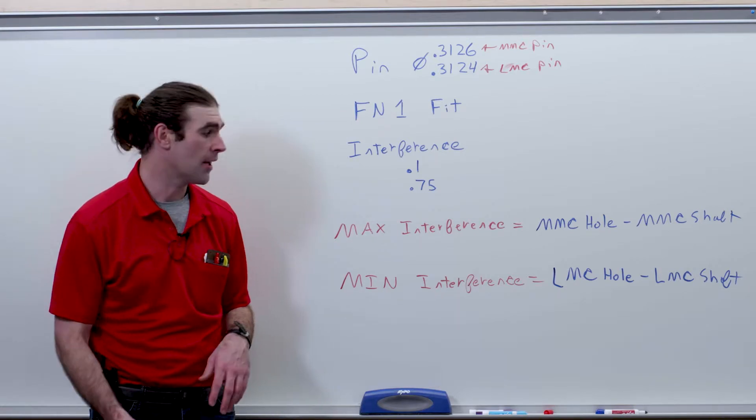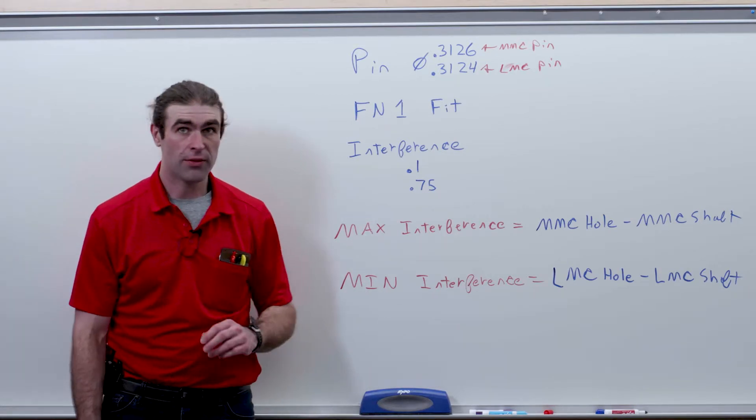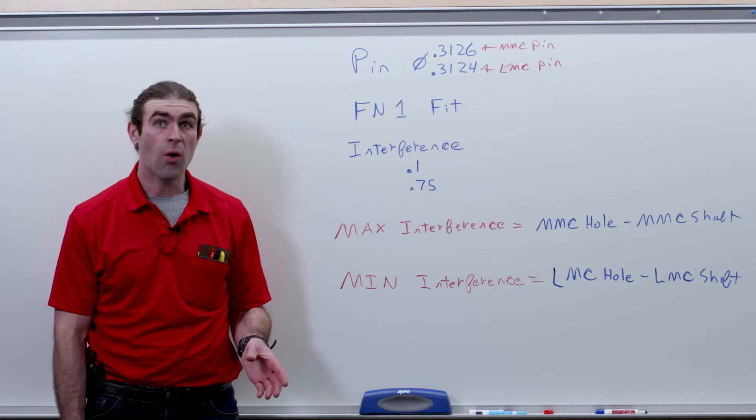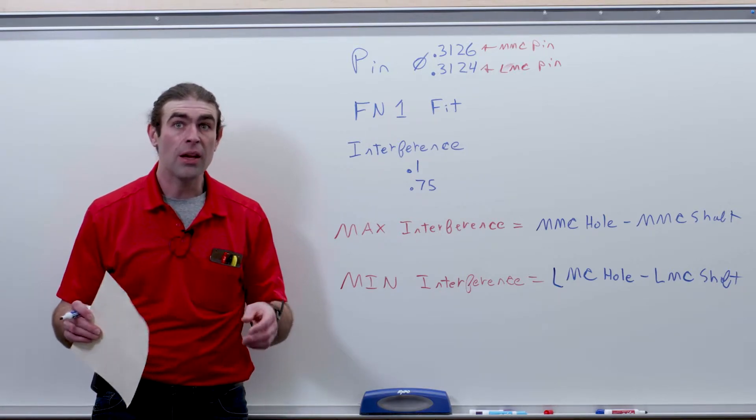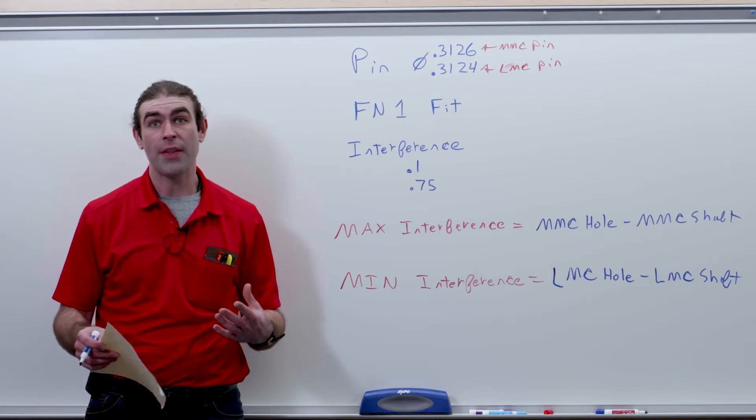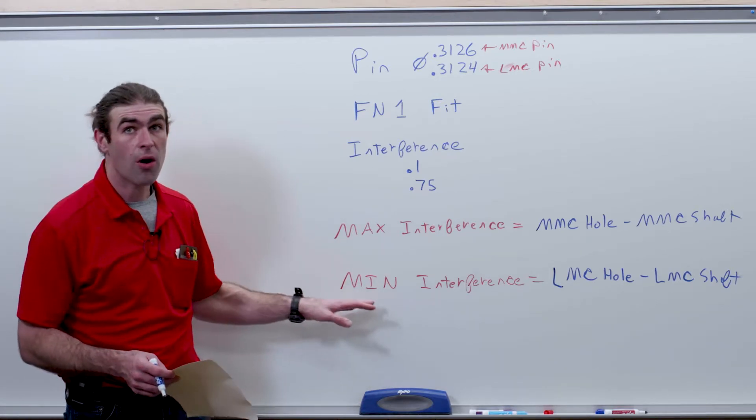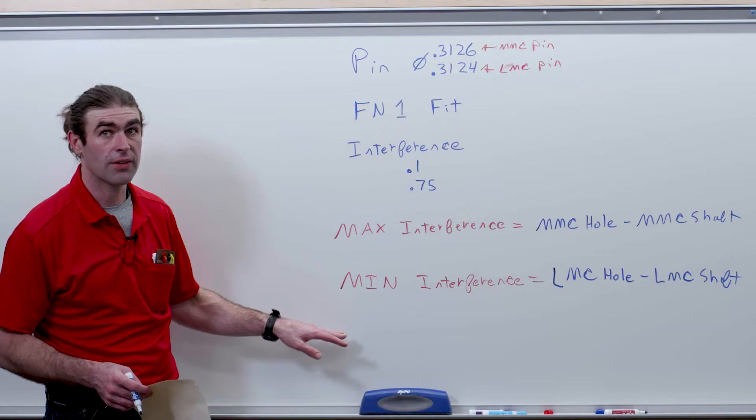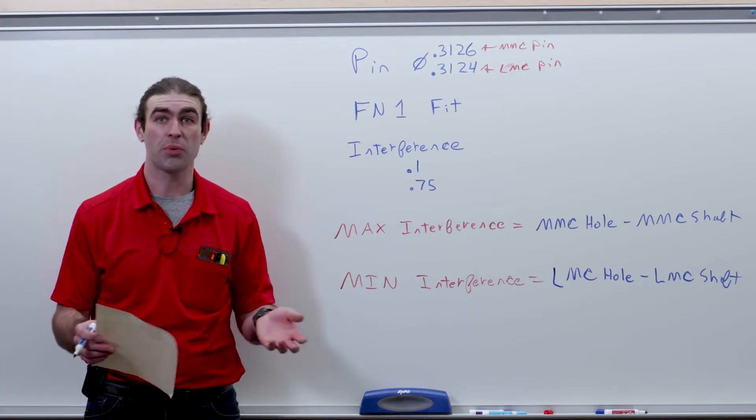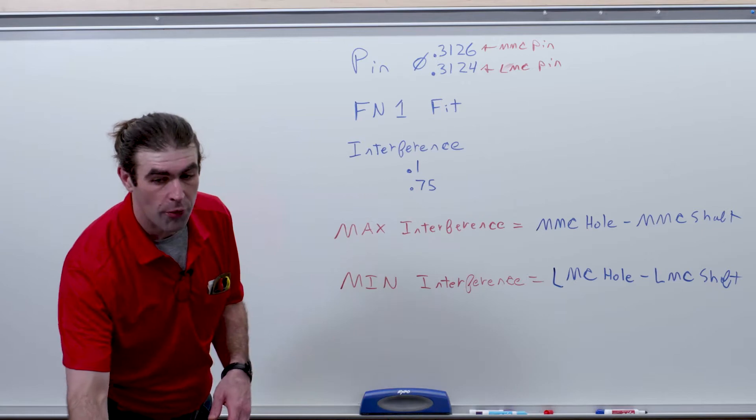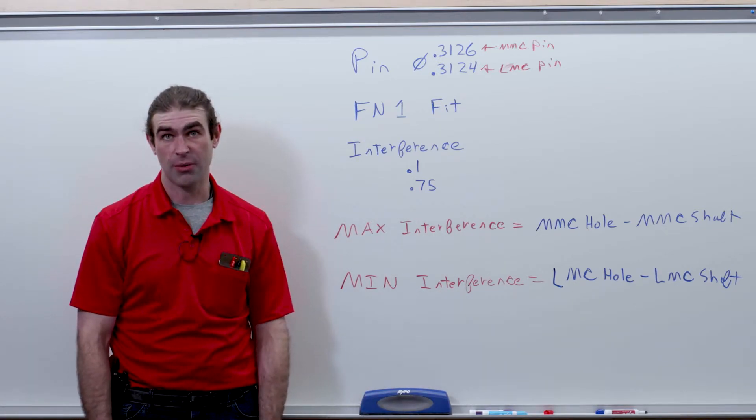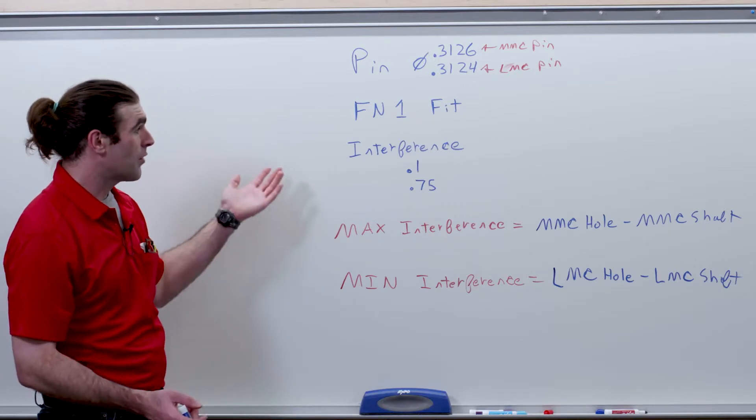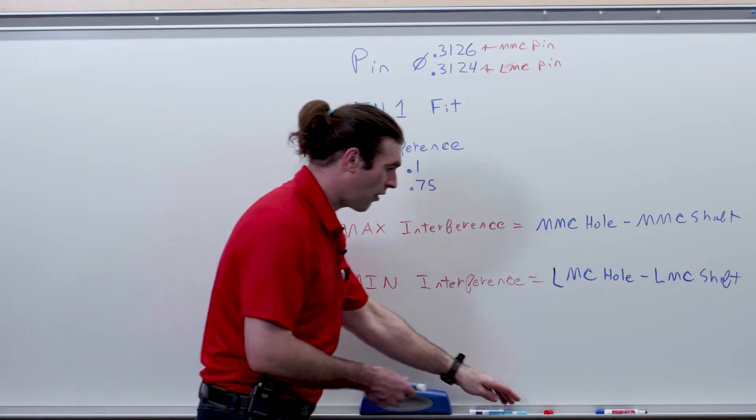And if you had allowance, this would be your allowance, so the least wiggle you could have if you wanted the parts to fit freely. The minimum interference, the LMC of the hole, so the largest the hole can be compared to the smallest the shaft can be, we would want this to be a negative number always if we need interference, because we want there always to be negative room between them. Normally, if we want clearance between the parts, that would be a positive number. Now, it should be pretty straightforward how we're going to solve this.